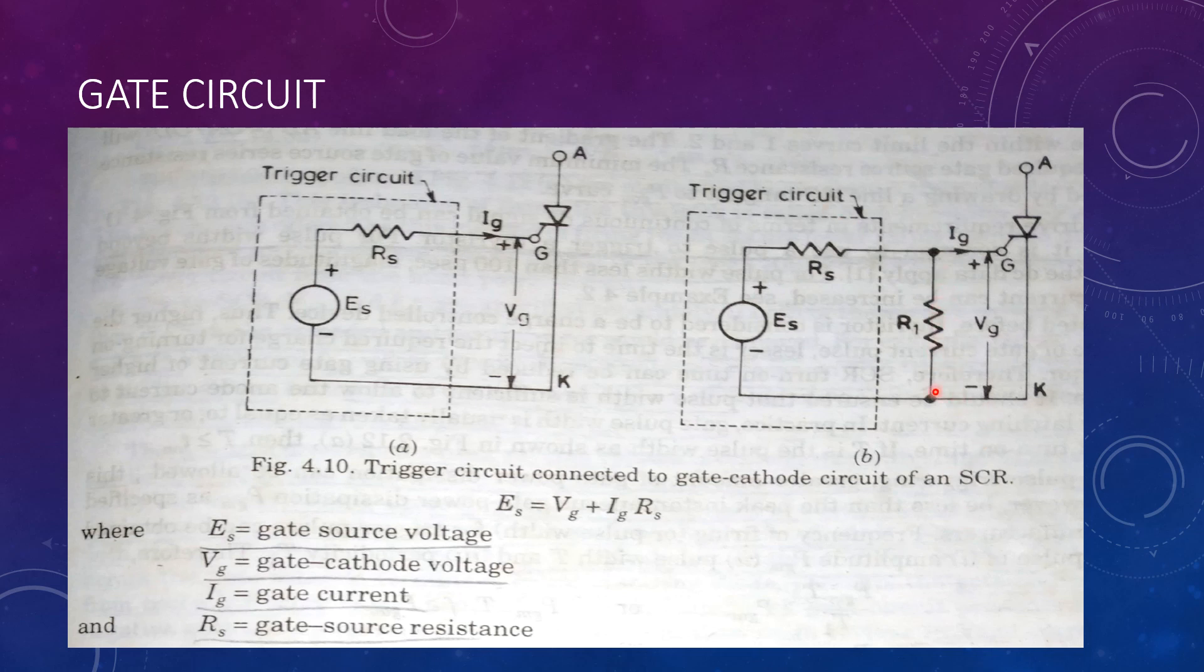An external resistance R1 is connected across the gate cathode circuit in order to provide an easy path for the leakage current through R1.